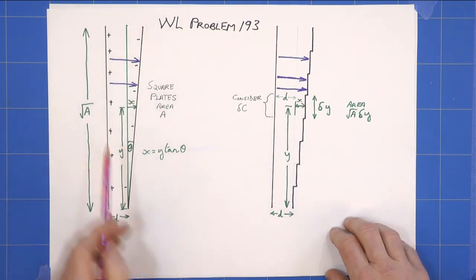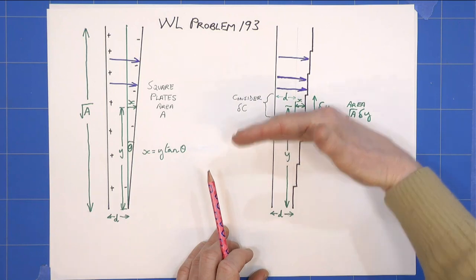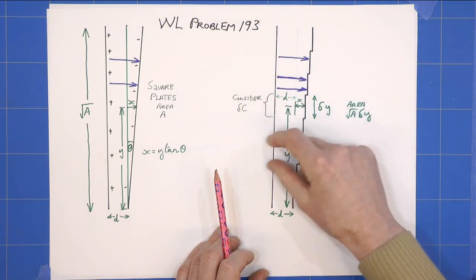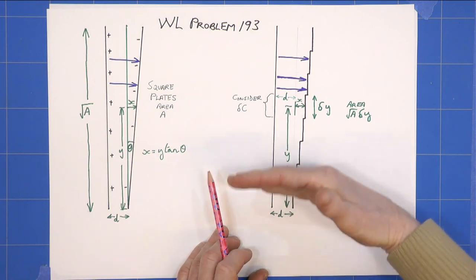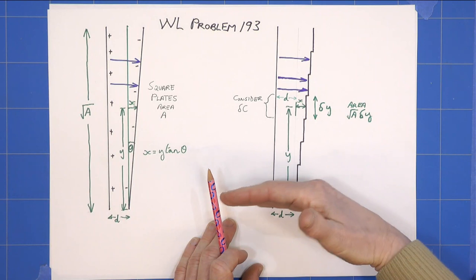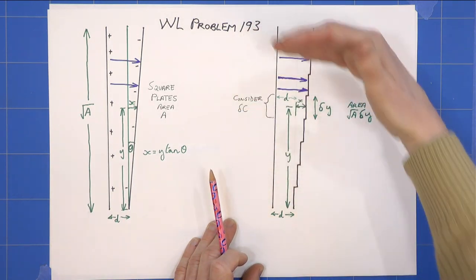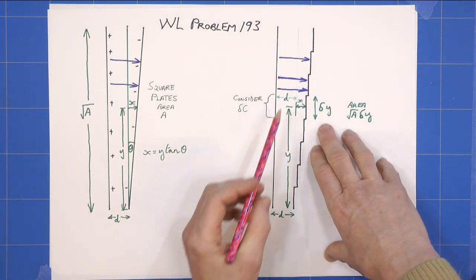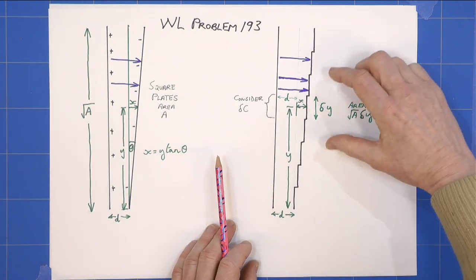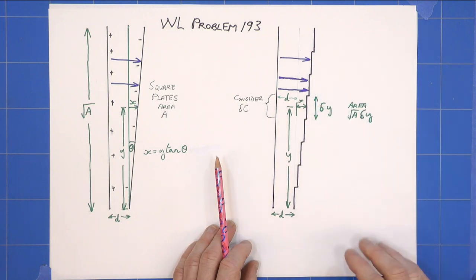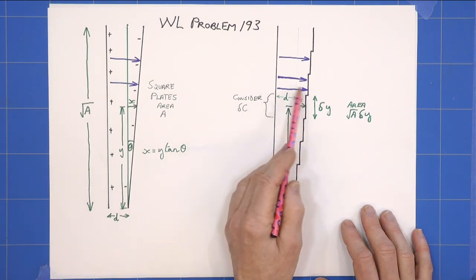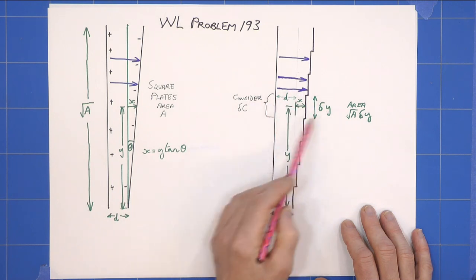What we're going to do is we're going to consider this as a series of little steps of smaller parallel plate capacitors, all in parallel with each other. So we can simply add up their individual capacitances to get the total capacitance. And what we will do is we will take a delta Y, and in the limit we're going to shrink it and end up with an integral to solve. Okay, so let's consider one elemental capacitor.